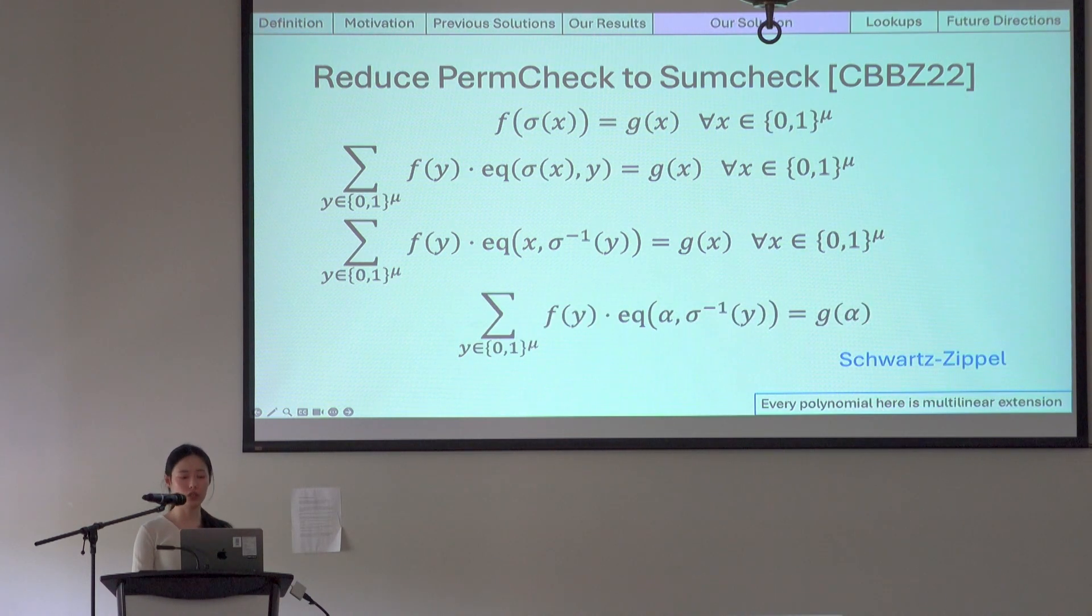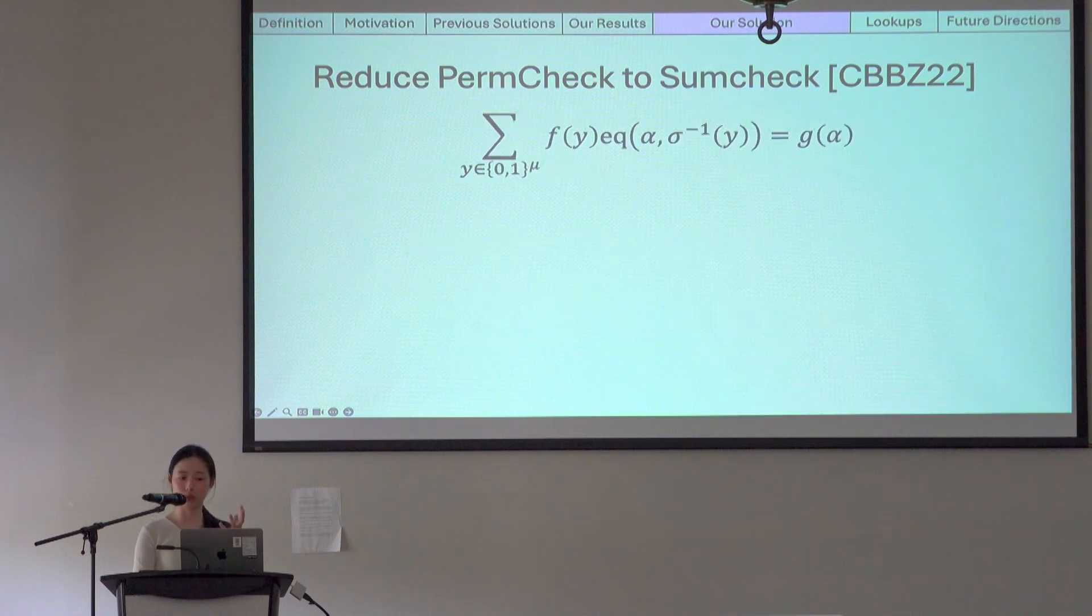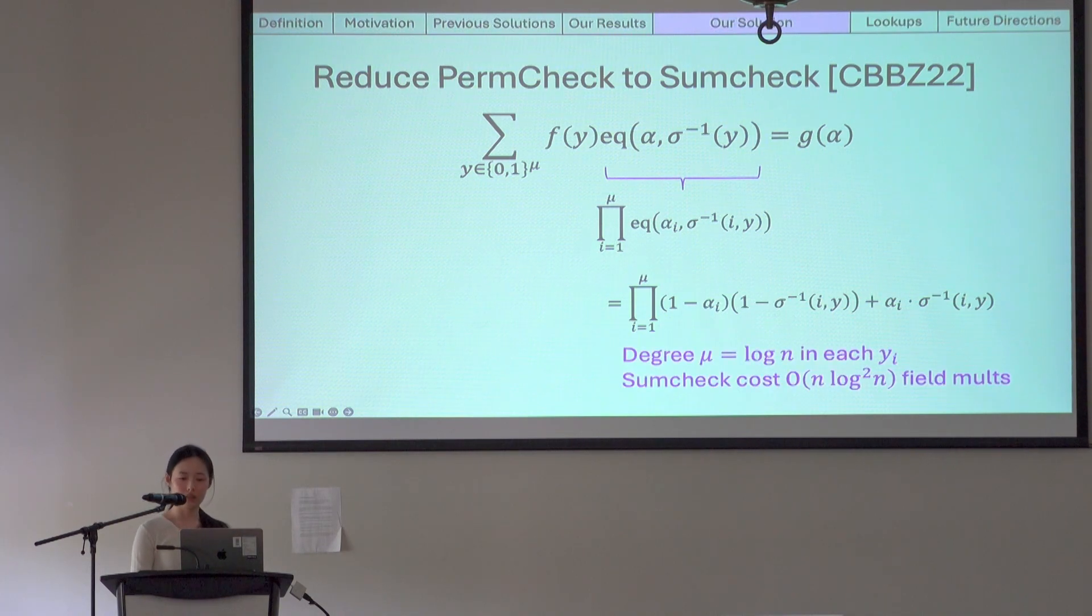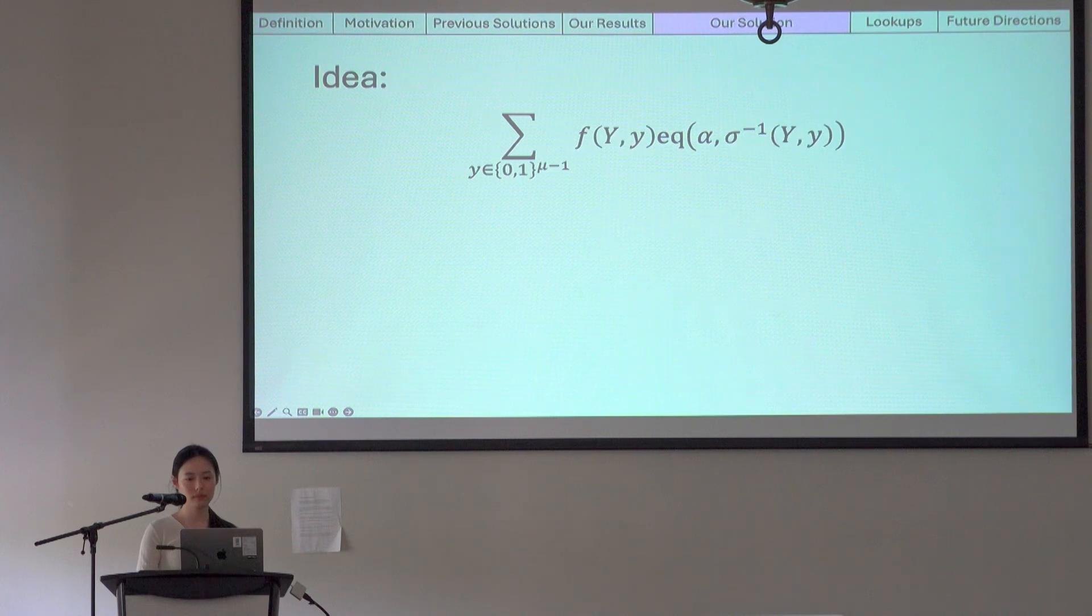This implies we can apply Schwartz-Zippel to test whether the left and the right hand side are the same polynomial by using a random challenge alpha. Okay, so we can run sum check to do this. The problem with efficiency is that this EQ term here is a big product of mu bitwise EQs, which means it is degree mu in each bit of Y. And the sum check costs all n times log squared n field multiplications.